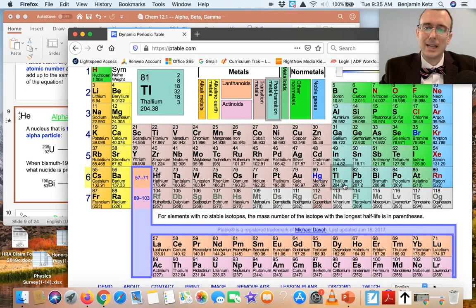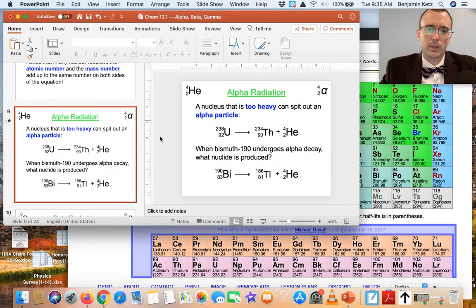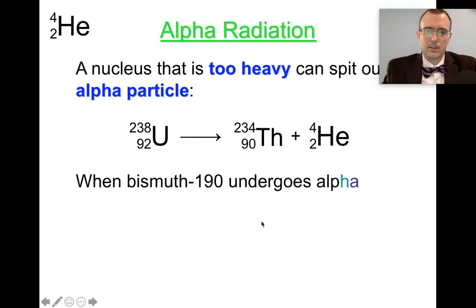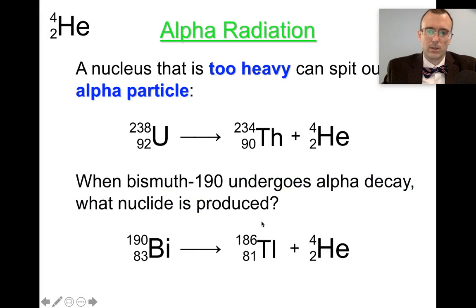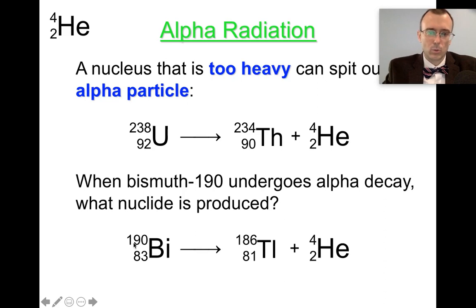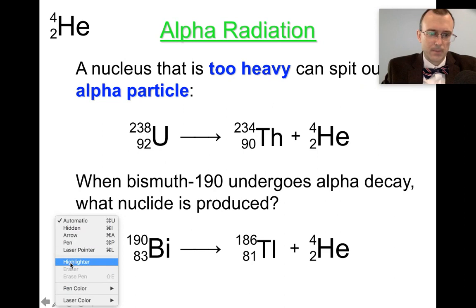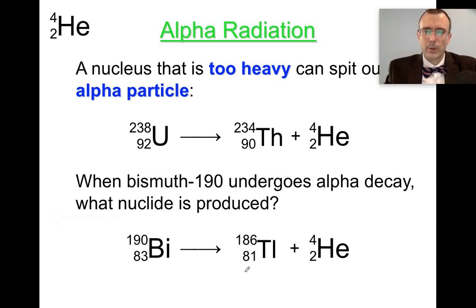So element 81 is thallium. We write down thallium, and we also figure out the mass number: what plus 4 is 190? That's 186 plus 4 is 190. So the product is thallium-186. That's alpha decay.